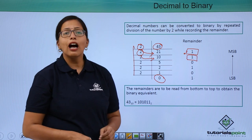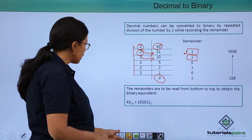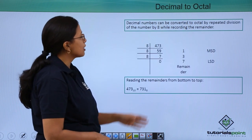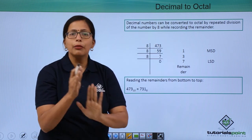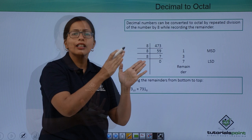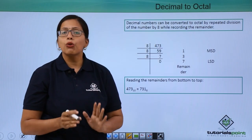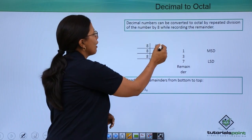So, let's now see how the decimal number can be converted to the octal number system. The system is still the same. We take the decimal number and repeatedly divide it till we get the quotient as 0.